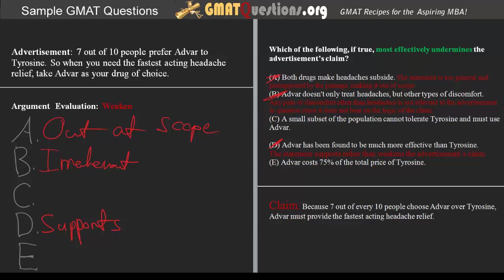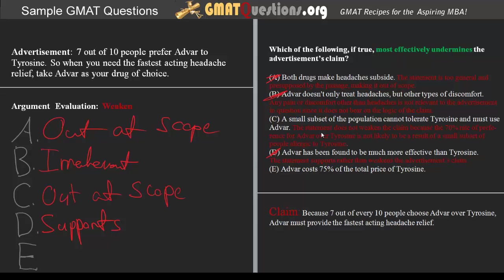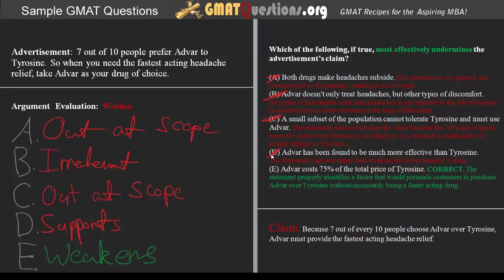C is outside the scope of the passage, considering that the statement does not weaken the claim — because the 70% rate of preference for Advar over tyrosine is not likely to be a result of a small subset of people allergic to tyrosine. This leaves E as the only possible correct answer, since the statement properly identifies a factor that would persuade customers to purchase Advar over tyrosine without necessarily being a faster-acting drug.